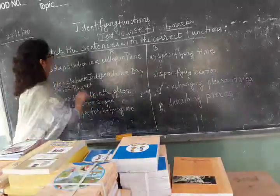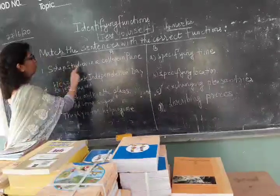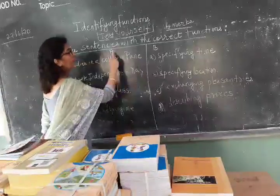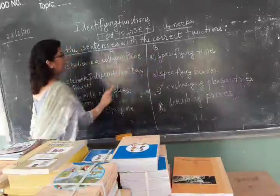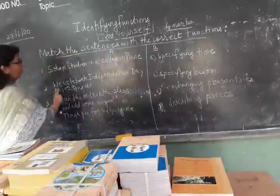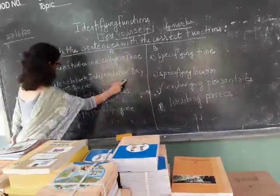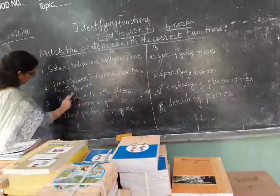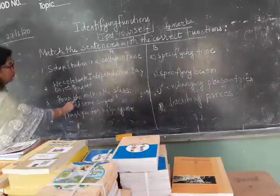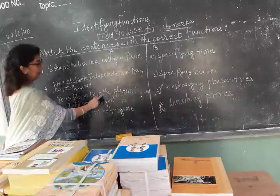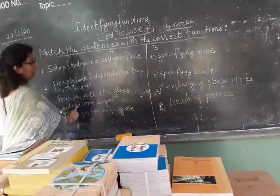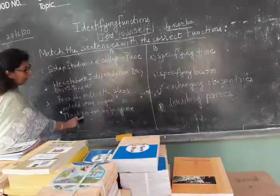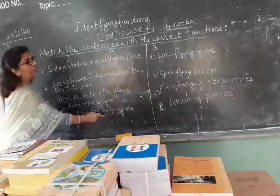I will just read. Number 1: Some studies in a college in Hume — you are part A or you are part B. Number 2: We celebrate Independence Day on 15th August. Number 3: Pour the milk in the glass and add some sugar. Number 4: Can we be of help? — number 4.